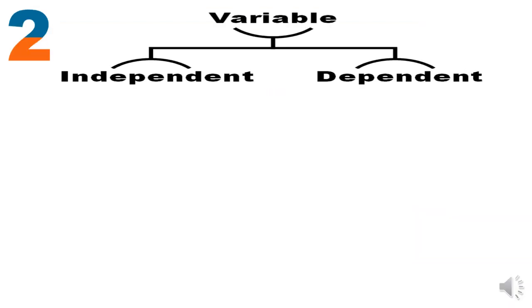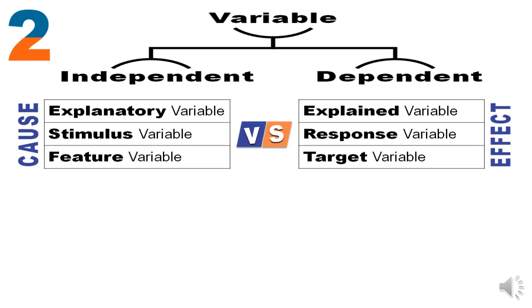We now come to the second classification: dependent versus independent variables. Any scenario is a set of causes that drives one particular effect. Independent variables are those explanatory causes, and the dependent variable is that one explained effect. A series of stimuli are independent variables and one response is a dependent variable; or a series of features are independent variables and one target is a dependent variable.